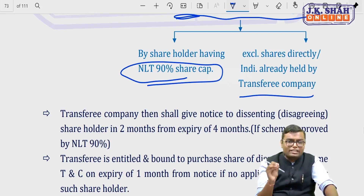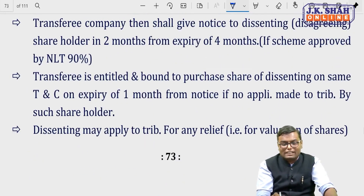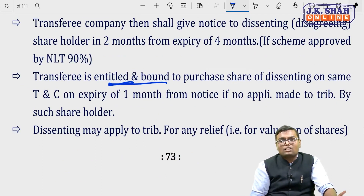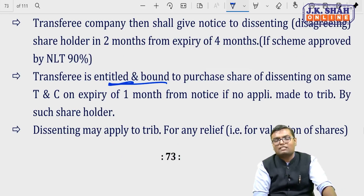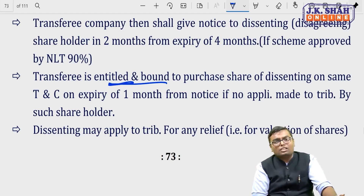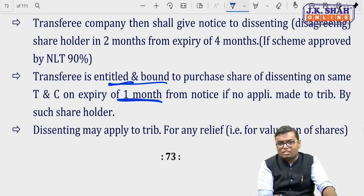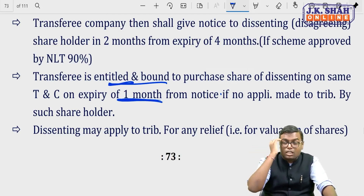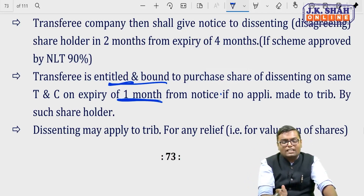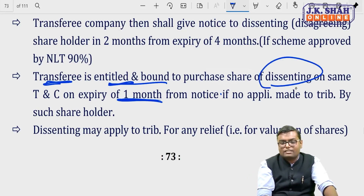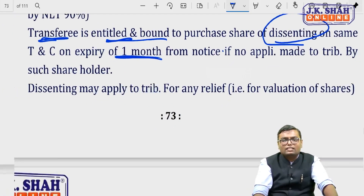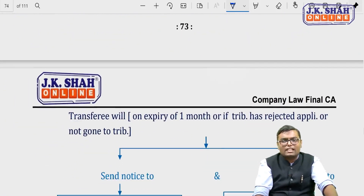The notice to disagreeing shareholders politely asks whether they agree or not. If they still don't agree, the transferee company is both entitled and bound to purchase the shares of all dissenting shareholders on the same terms and conditions, on expiry of 1 month from the notice — provided no application has been made to the tribunal by such shareholders. If they go to the tribunal, they must do so within one month of the notice.